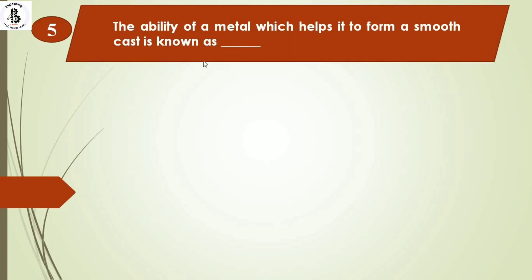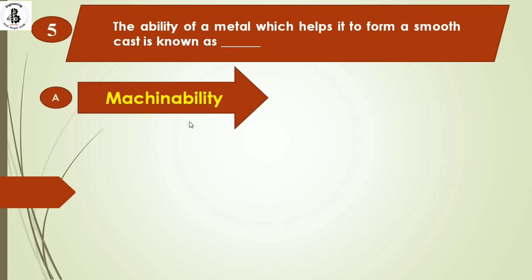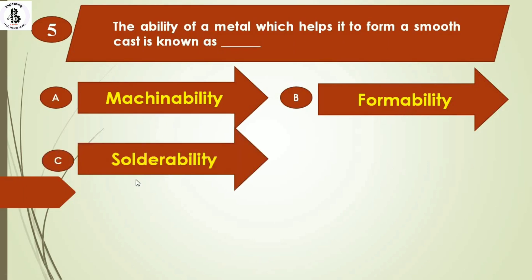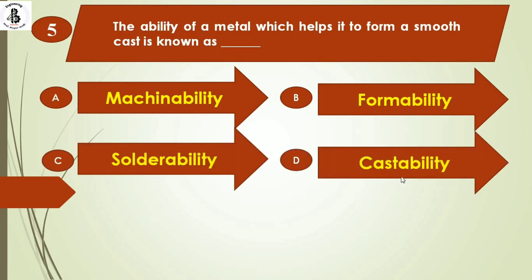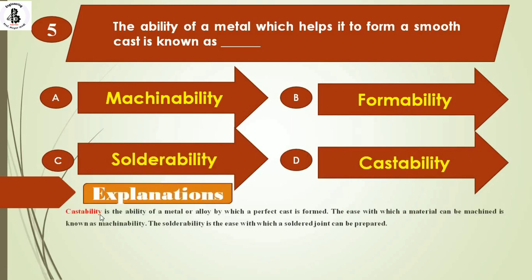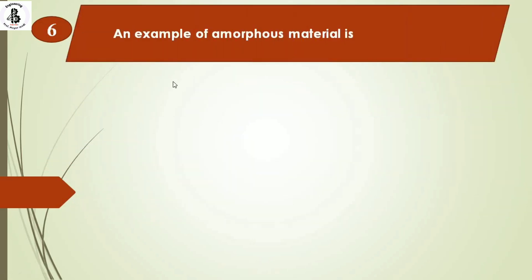The next question: the ability of a metal which helps it to form a smooth cast is known as option A) machinability, option B) formability, option C) solderability, option D) castability. Castability refers to the ability of metals or an alloy by which a perfect cast is formed. Machinability is the ease of machining, and solderability is the ease of forming a solder joint. The right answer is option D, castability.